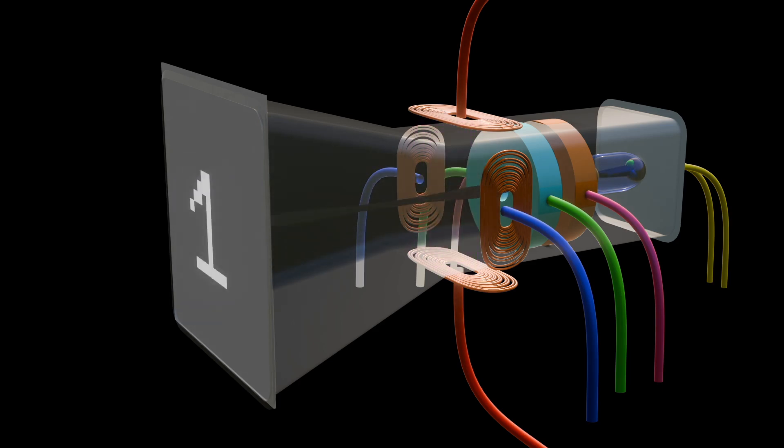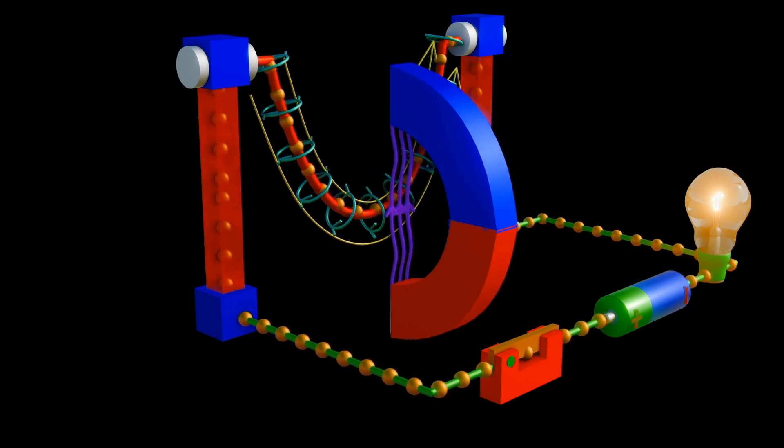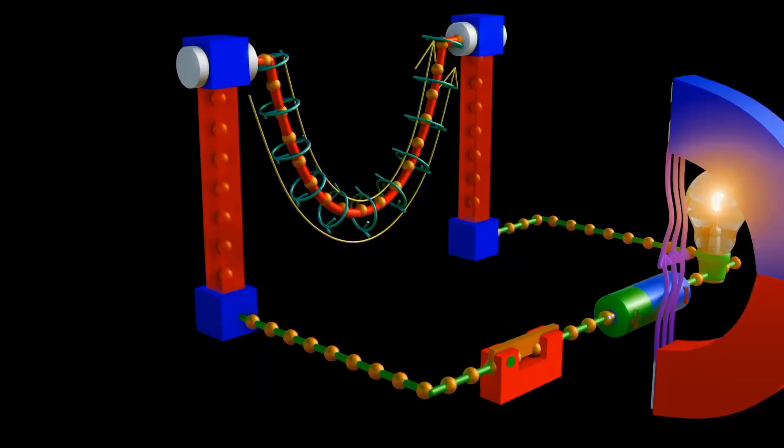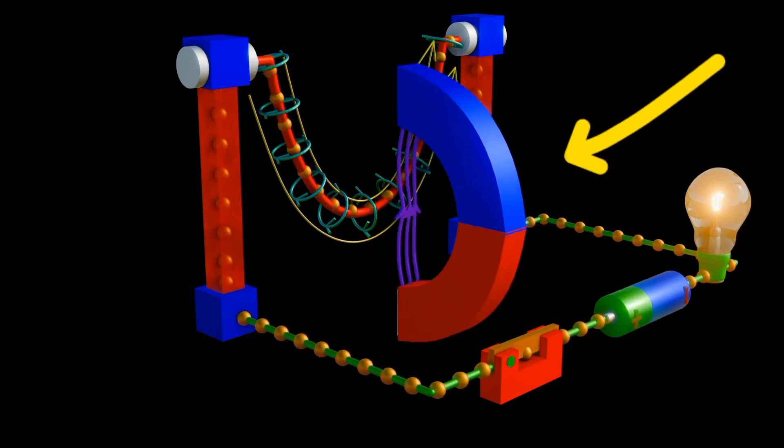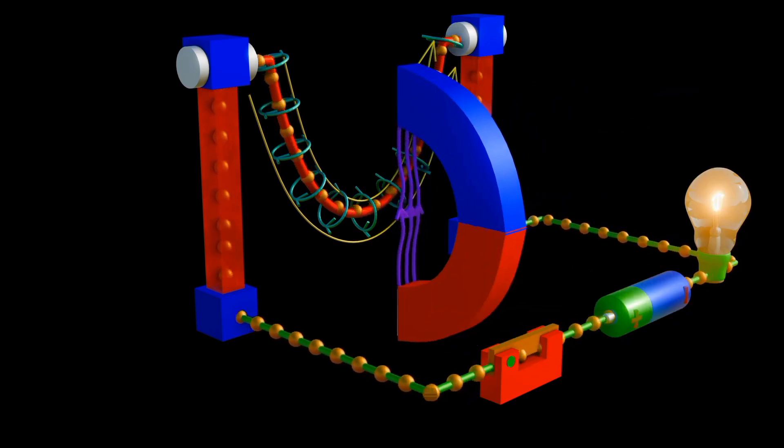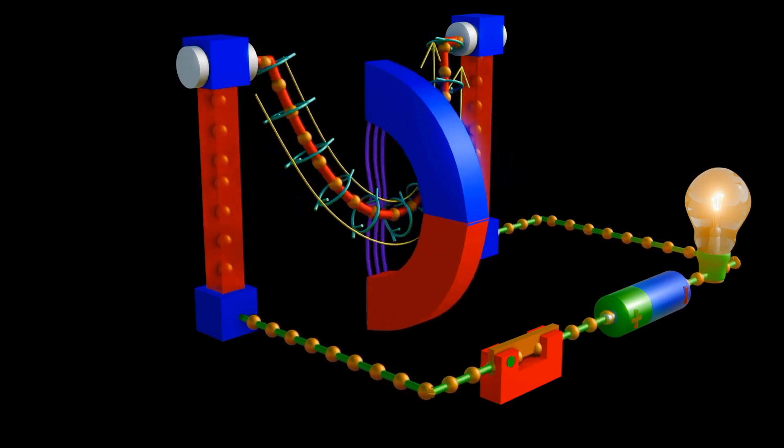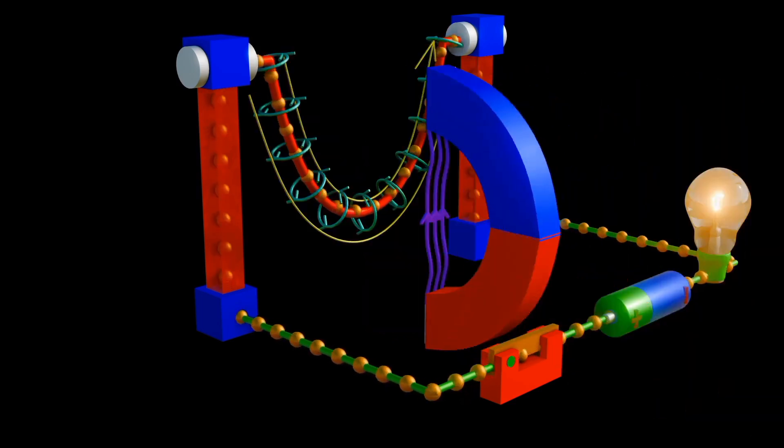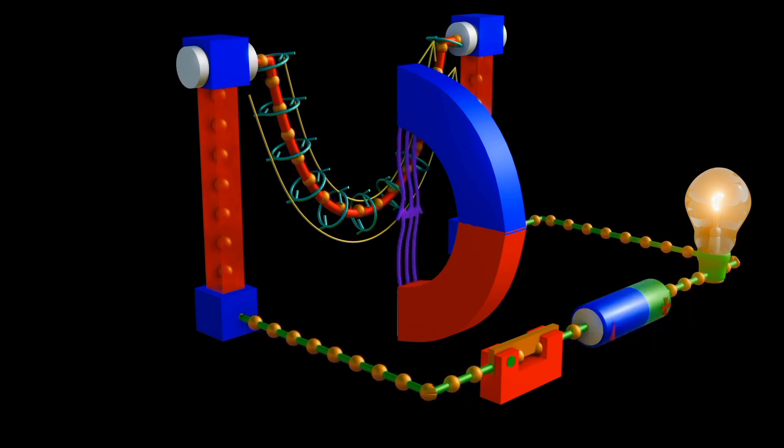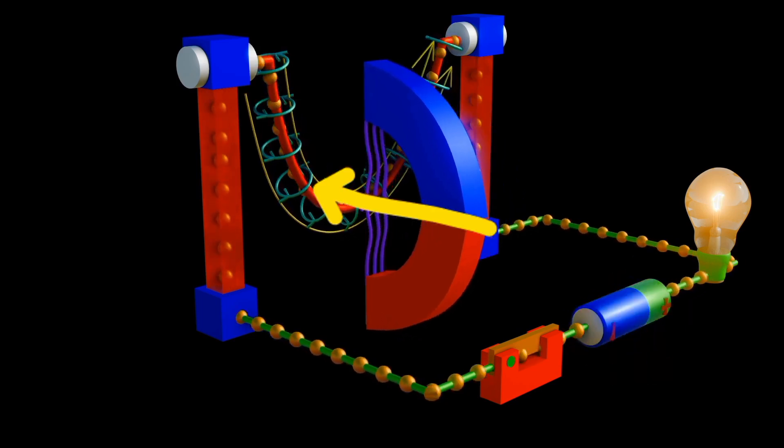Interaction between the electron beams and magnetic field is summarized by the Lorentz Force Law. According to the Lorentz Force Law, a moving charged particle like an electron experiences a force when it enters a magnetic field. The direction of the force is perpendicular to both the direction of the electron's motion and the direction of the magnetic field.